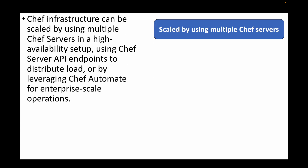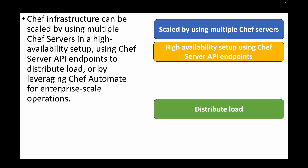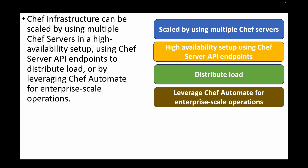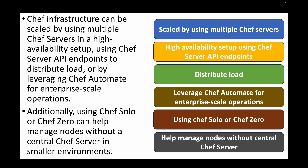The next question is: how do you scale Chef infrastructure? We can use multiple Chef Servers running in a high availability setup, leverage server API endpoints to distribute the load, and use Chef Automate for enterprise-scale operations. One option is running multiple Chef Server instances behind a load balancer. Additionally, Chef Solo or Chef Zero can help manage nodes without a central Chef Server in smaller environments with five to ten machines.